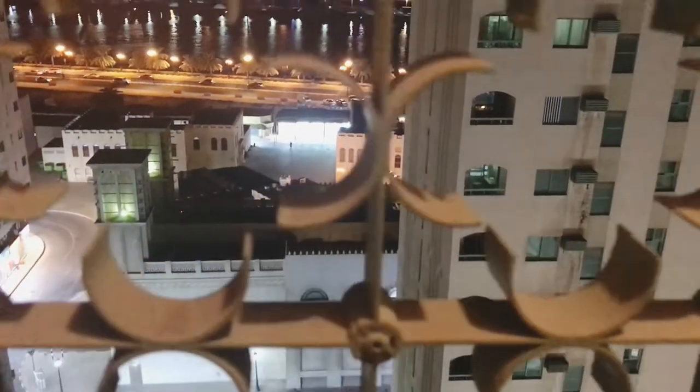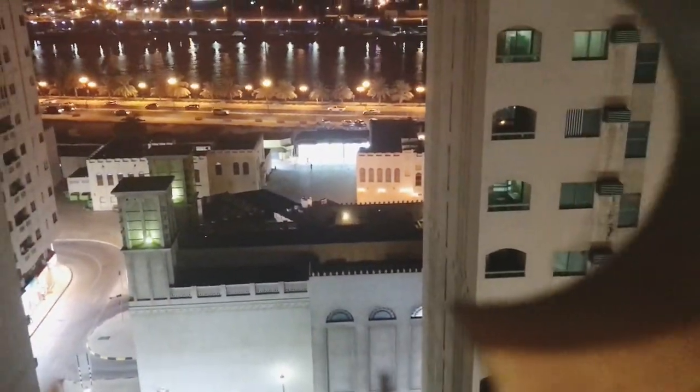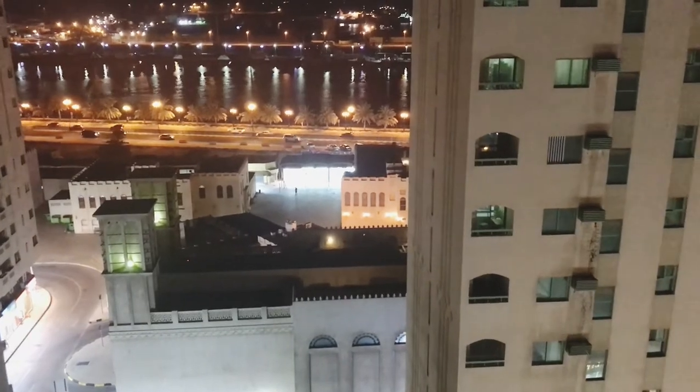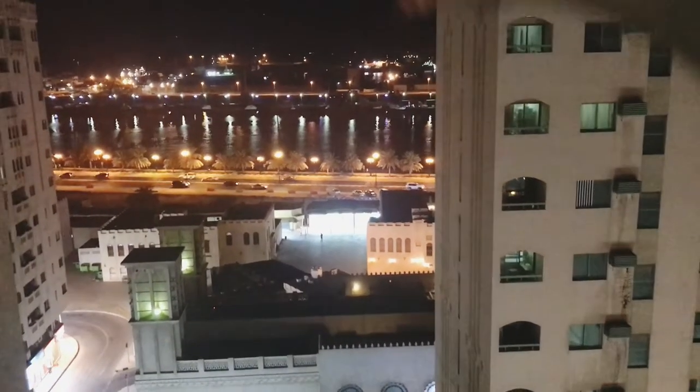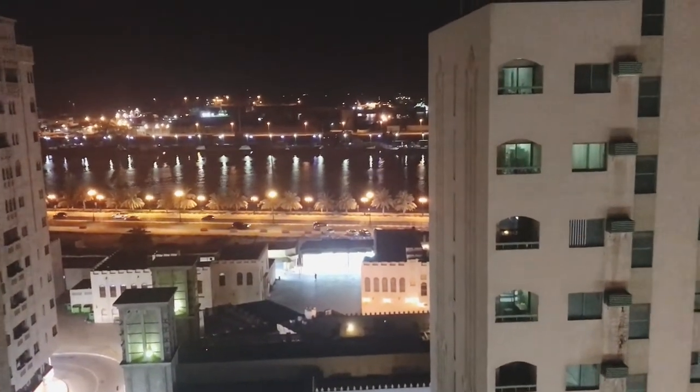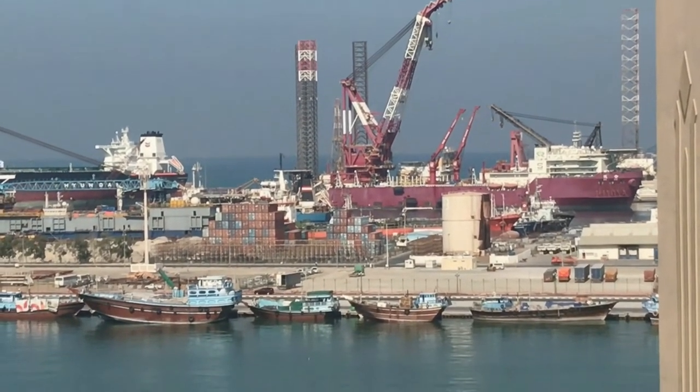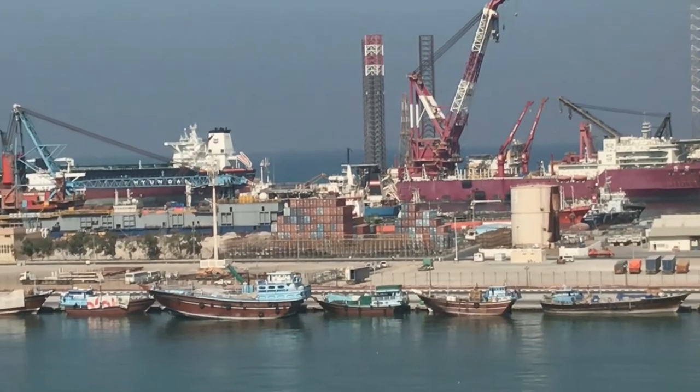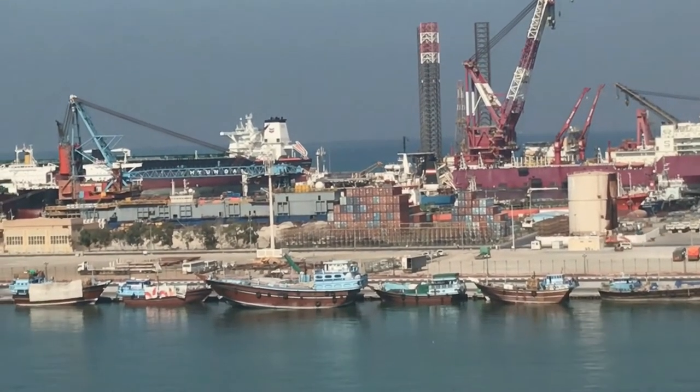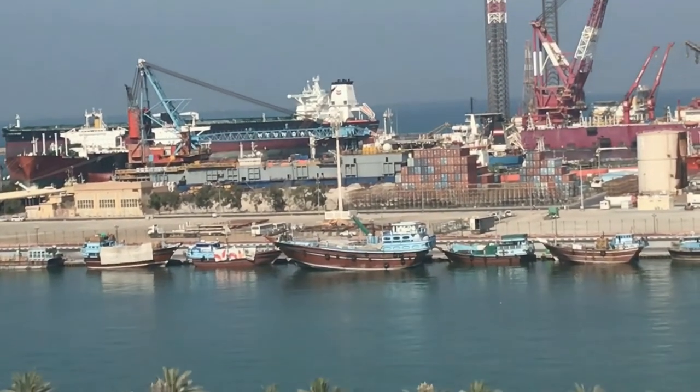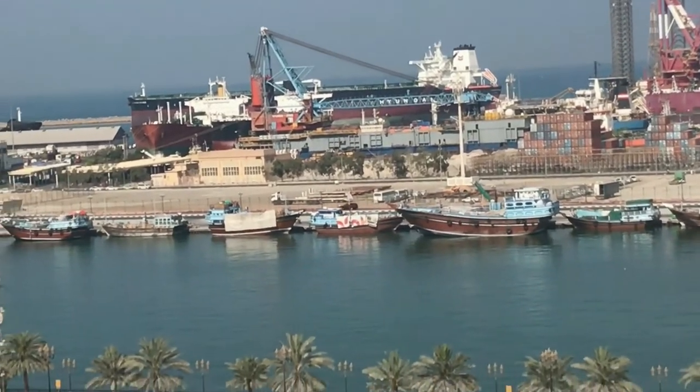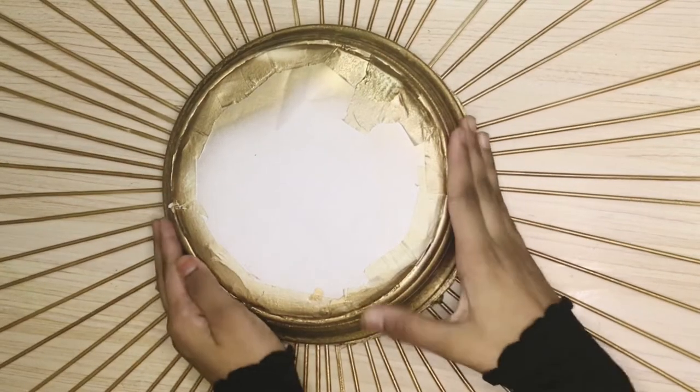This is a view from our balcony. This is a night view. We are living in the Sharjah Cornish side. We can see some boats when we're looking out from our balcony. Now back to our craft. I am removing the plastic bag, tape, and the paper from the glass.